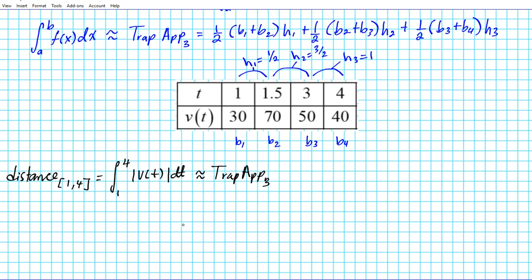So we're going to have trapezoid one, which is one half of base one. Now one thing to note is since we're looking for distance here, we're going to have to take the absolute value of the bases.